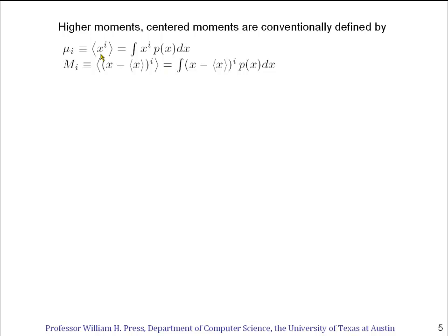The mean was the first moment where we put i equal one here, but there also is notation and names for higher moments. So in general, the ith moment of a distribution p(x) will be the integral of x^i p(x)dx. It's also useful to define what are called centered moments. The centered ith moment, which is often denoted M_i, says that you take x, you subtract its mean, and then you take the expectation value of the ith power of it. So similarly, that's the integral of (x - <x>)^i times p(x)dx.